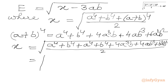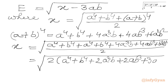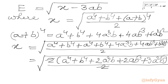Now I will take 2 common from the numerator. We get 2 times the bracket: a⁴ plus b⁴, plus 2a³b, plus 2ab³, plus 3a²b². The bracket is closed, and the denominator is 2. This 2 in the numerator and the 2 in the denominator cancel.